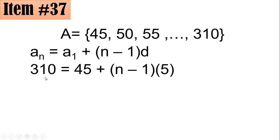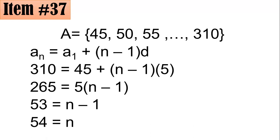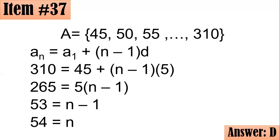So we have 310 equals 45 plus (n minus 1) times 5. Subtracting 45 from both sides gives 265 equals 5 times (n minus 1). Dividing both sides by 5 gives 53 equals n minus 1. Adding 1 to both sides gives n equals 54. Hence, letter D is the correct answer.